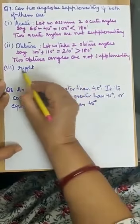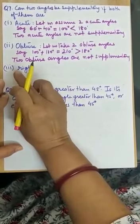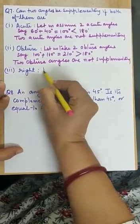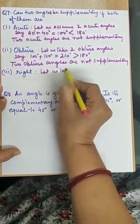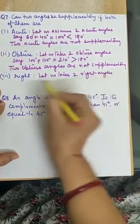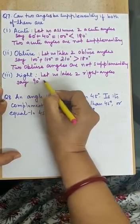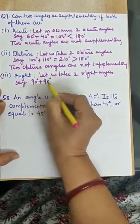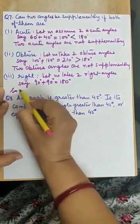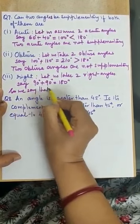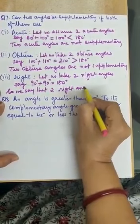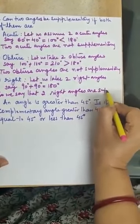Now coming to the third part. We have to find: can two angles be supplementary if both of them are right angles? Let us take two right angles, say 90 degrees and 90 degrees. Their sum is equal to 180 degrees. So we say that two right angles are supplementary.